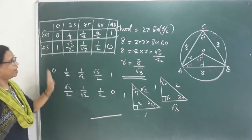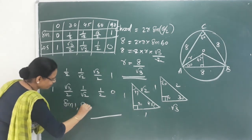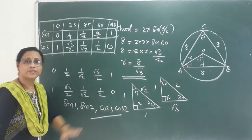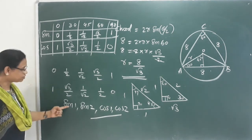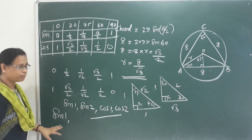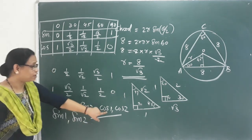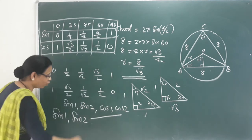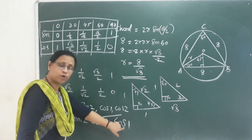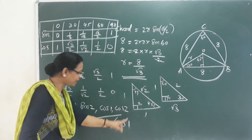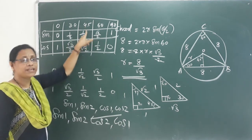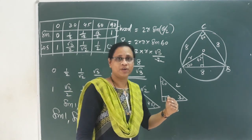We have a question: arrange sin 1°, sin 2°, cos 1°, cos 2° in ascending order. Since sin increases from 0° onward and cos decreases, we compare these values. Sin 45 equals cos 45 — they are equal. So for angles below 45°, sin is less than cos. Thank you. Next class.